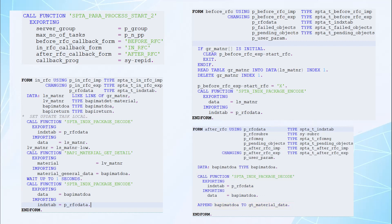Again, control gets transferred back to the before RFC subroutine. If there is no further data to be processed and no material number remaining, we clear the field startRFC, which indicates the end of processing. Once that is done, the execution of the SPTA_PARA_PROCESS_START_TO function module completes, and with that, our parallel processing is completed.